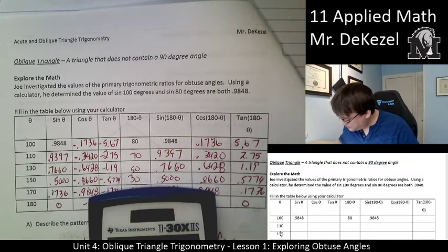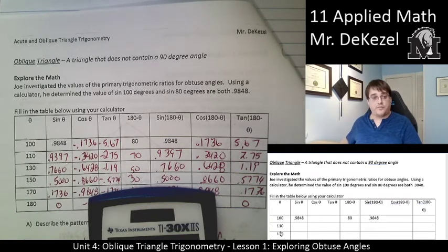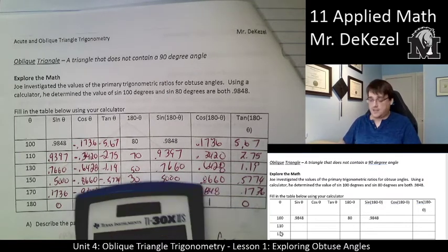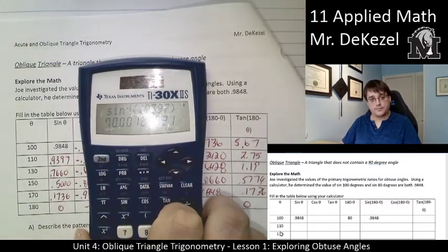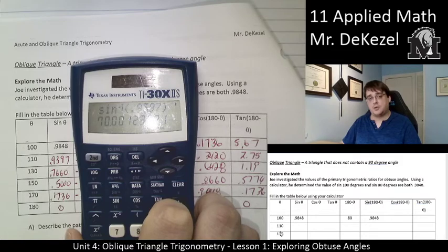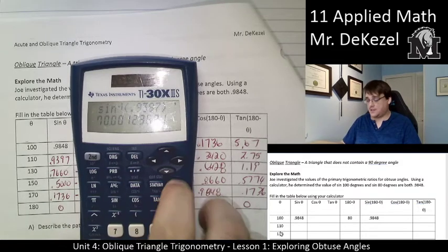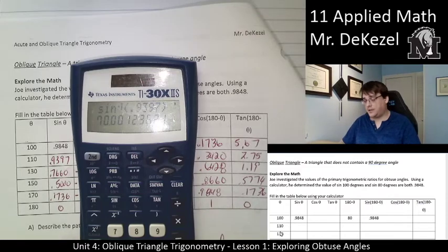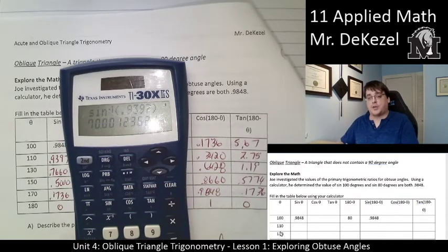But let's say you were doing in your calculator, you wanted to do the sine of 0.9397. The sine inverse. So sine inverse of 0.9397 tells us that it's 70 degrees. But how do we know that it doesn't actually mean 110? Because that number applies to both 70 and 110. And that's really what we're trying to get at here.